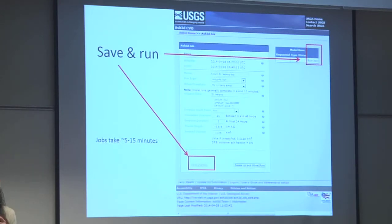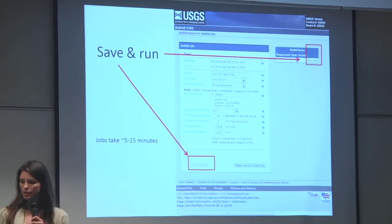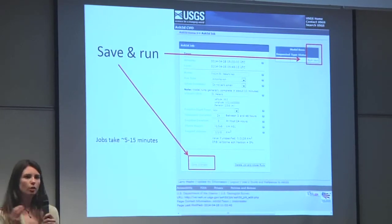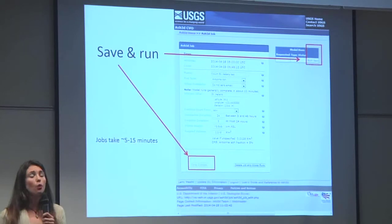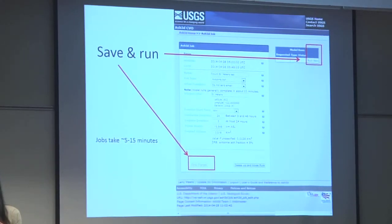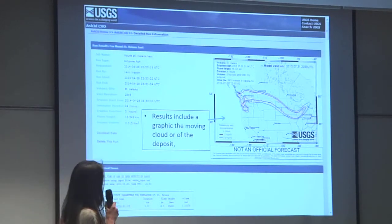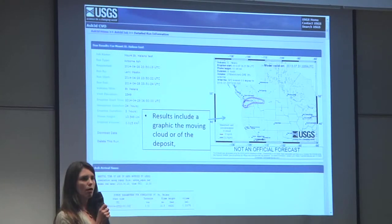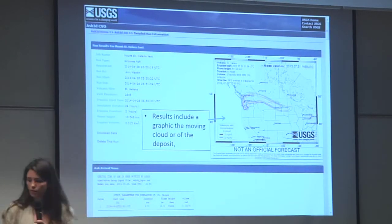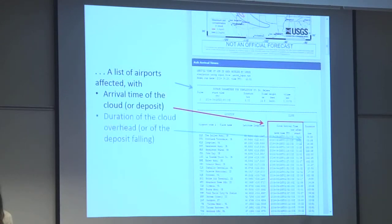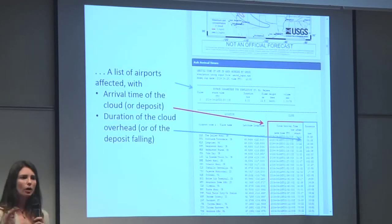Jobs take only five to 15 minutes. This is the stripped-down version of the code, so it doesn't have some of the fancy processes. But it's designed to run quickly so that if there was an emergency and you needed to know really quickly where the ash is going to go and which airports are going to be affected, it can be pretty quick. You get a GIF or different graphic formats of output, KMZ files, and a list of airports affected by ash, when the cloud will arrive, and how long it will be hanging over the airport.